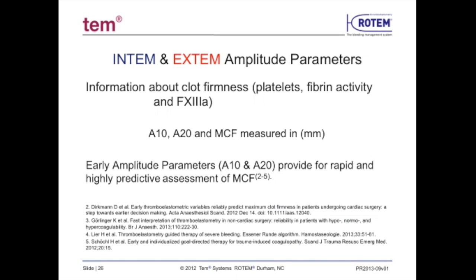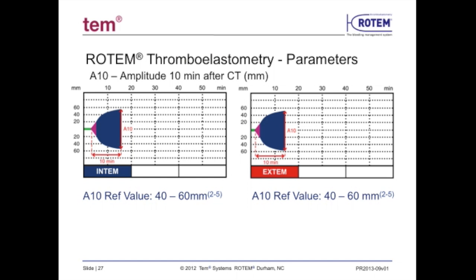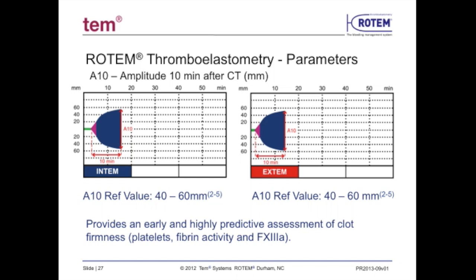After evaluating the CT to assess thrombin generation, the next important parameters to evaluate are the amplitude parameters A10, A20, and MCF maximum clot firmness. These demonstrate clot firmness, primarily reflecting the quality of the clot — the fibrin, platelet, and activated factor XIII complexes. By looking at the early parameter A10, we can make a rapid and highly predictive assessment of the maximum clot firmness at a much earlier point, which can lead to earlier targeted therapeutic interventions.